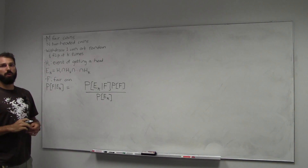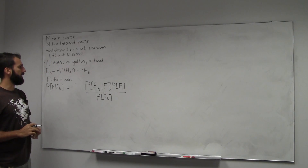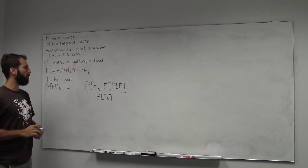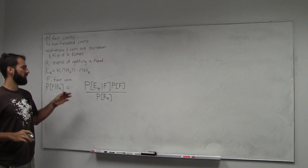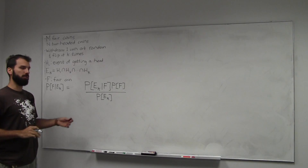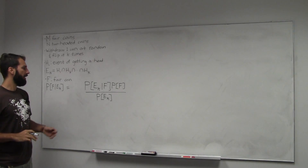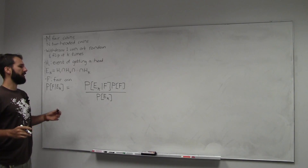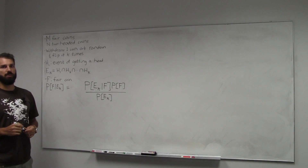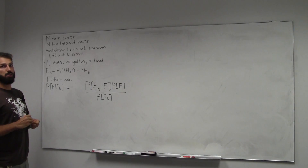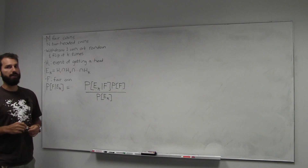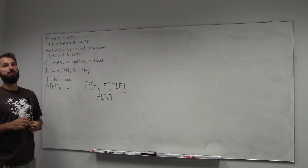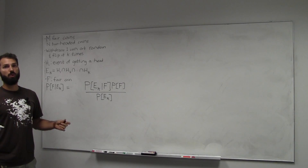In the numerator we have the probability of getting k heads in a row given you have a fair coin, times the probability you have a fair coin. That should be easy to solve. The denominator asks what's the probability of getting k heads in a row — this is more subtle because it depends on whether you have the fair coin or not. So we're going to use the law of total probability.